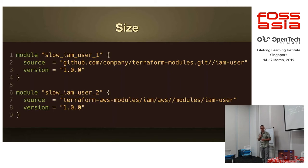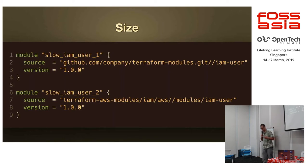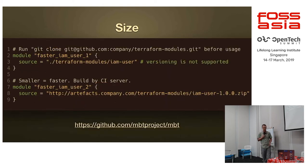If you host your infrastructure modules in one big repository and call this module multiple times — for example to create IAM users — Terraform will download the whole repository and just change the directory to the place you want. If you're making hundreds of IAM users, you'll have to clone the repository hundreds of times and use just a small subset, which wastes time and bandwidth. One solution is to use a project like MBT where you can build small artifacts for each version of the module.